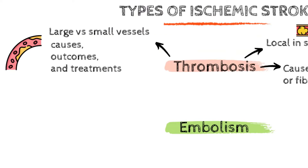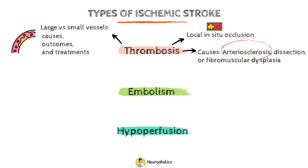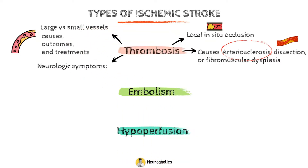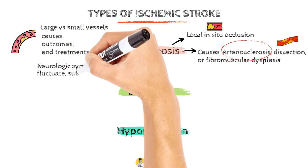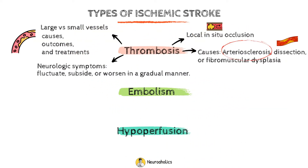In the large extracranial and intracranial arteries that feed the brain, atherosclerosis is by far the most prevalent cause of in situ local disease. If a patient is suffering from thrombosis, the neurologic symptoms may fluctuate, subside, or worsen in a gradual manner.